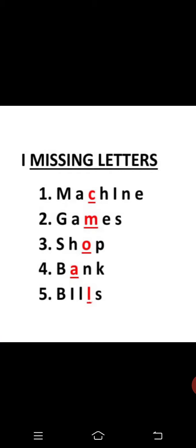First roman letter is missing letters. What do you mean about this roman letter? The red letters are going to miss in the exam, so you have to fill it with that letters. The red letters are going to miss in the exam, so you have to write in the blank space. Machine - M-A-C-H-I-N-E. Second one, Games - G-A-M-E-S.